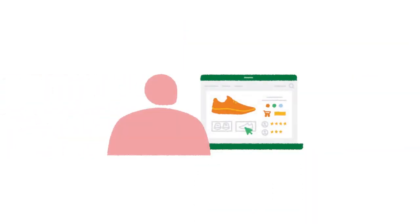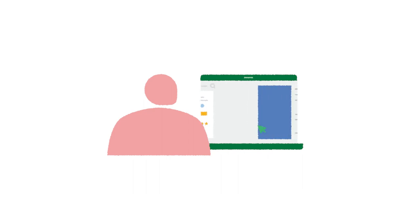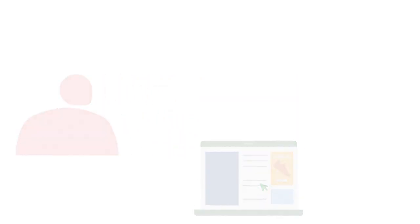One example where an advertiser might want to do this is called remarketing — a way to connect with people who previously interacted with your website. For example, if you look at running shoes on an online shoe store but don't make a purchase, the store might want you to see an ad when they have a special offer on running shoes.